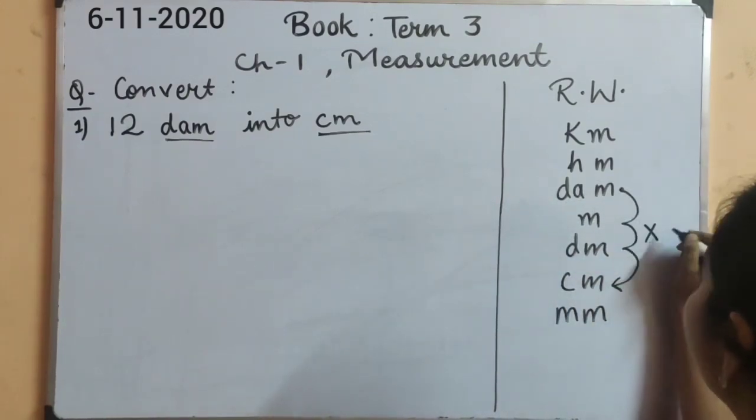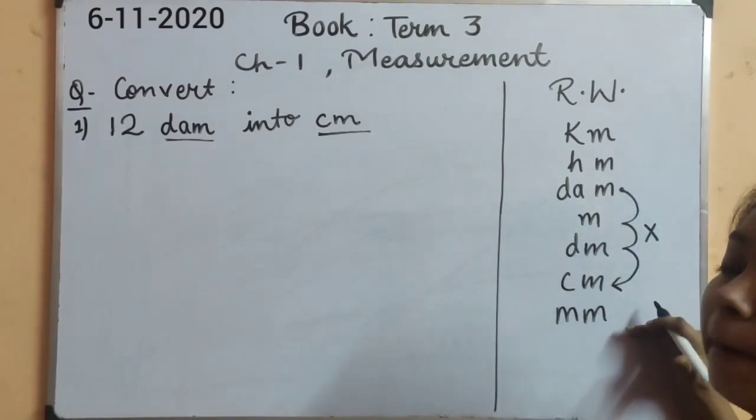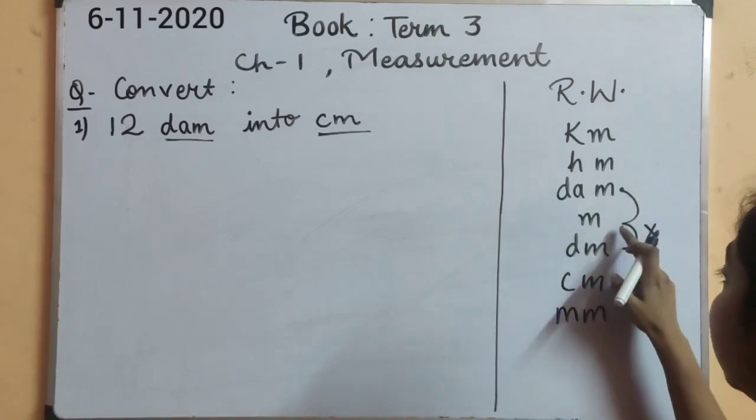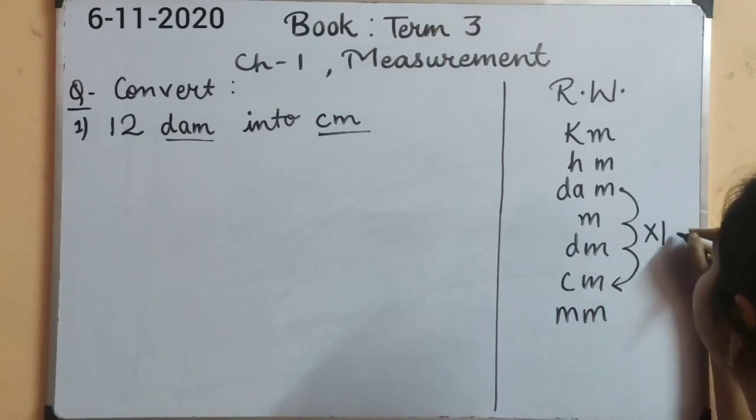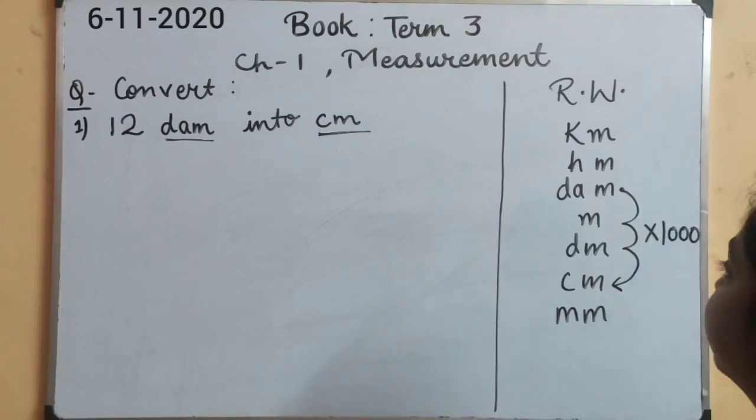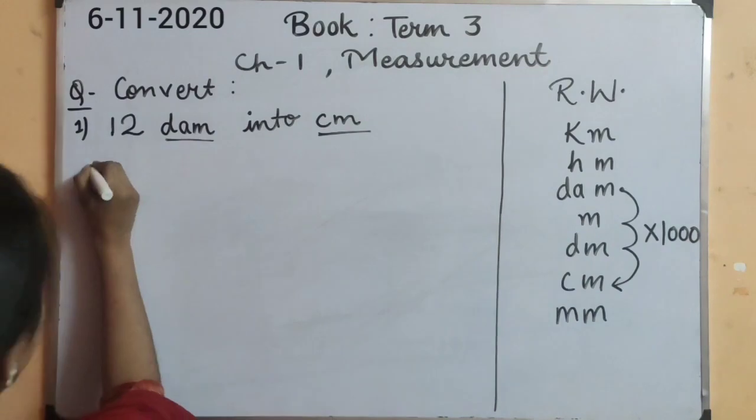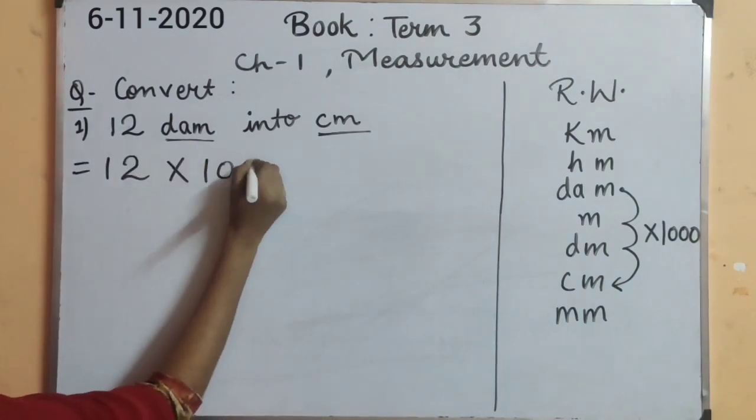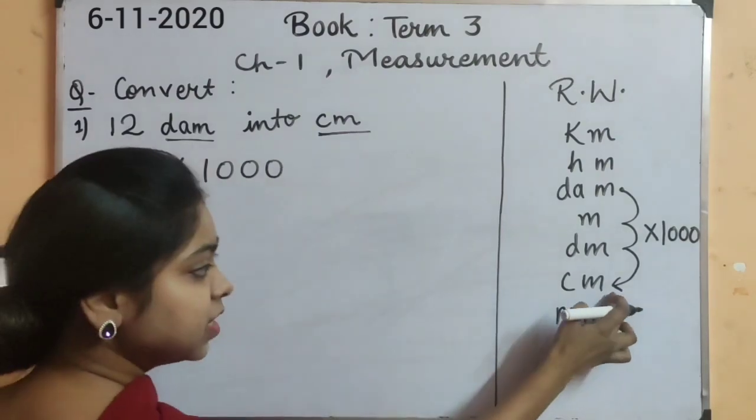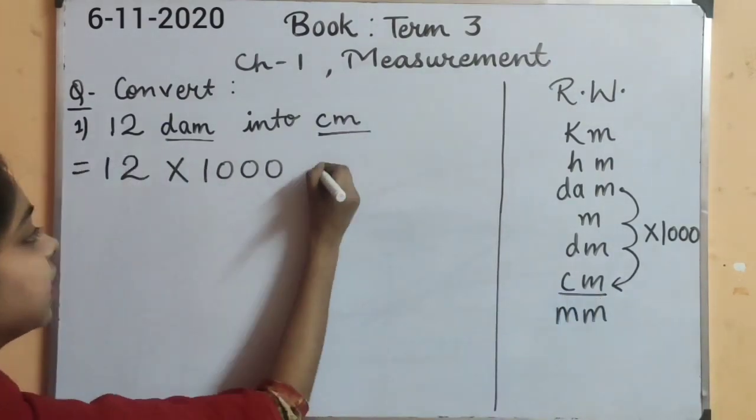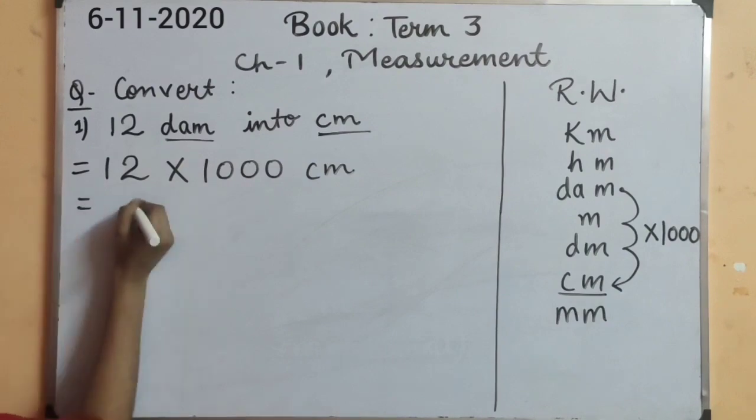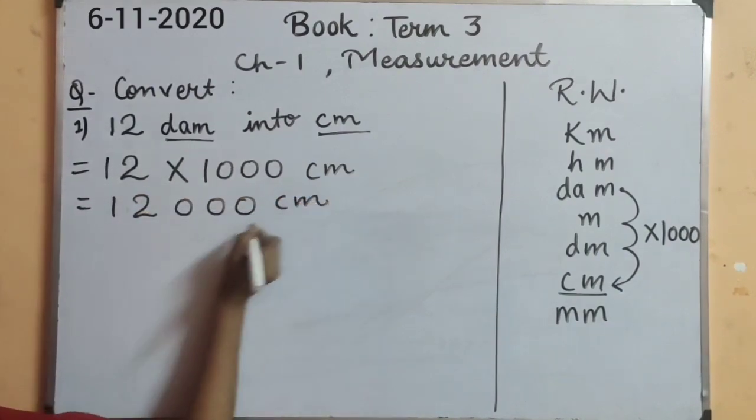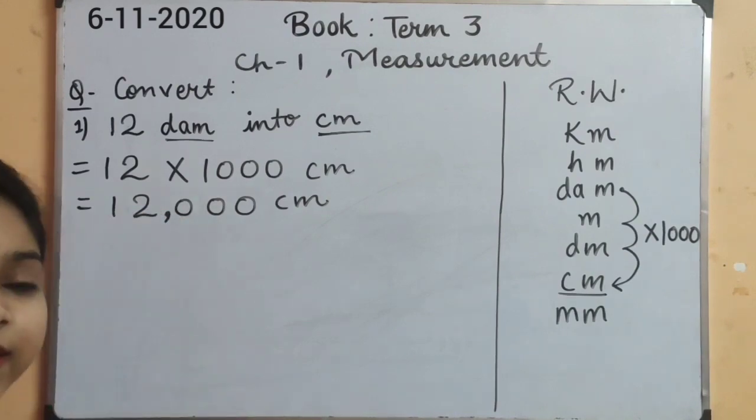So it means, first of all it is going from up to down, big to small. So we will multiply by one, two, three - we will multiply it with thousand. So let's write it here. Twelve multiply with thousand. Now the unit has been changed to centimeter. So let's multiply it. Twelve thousand centimeter. So this is your answer.